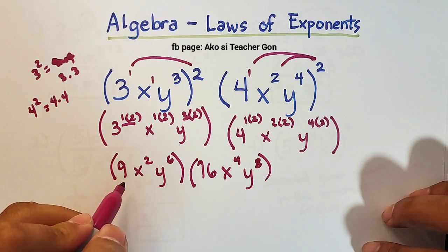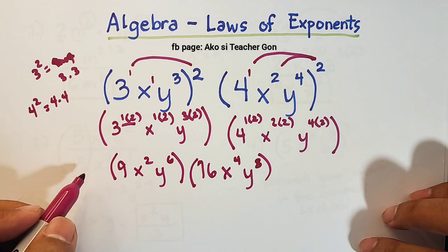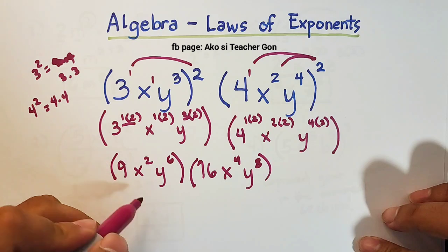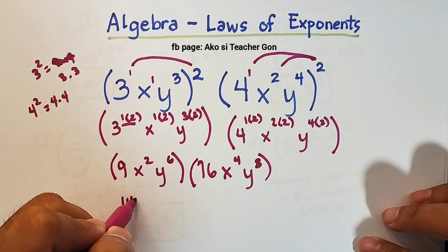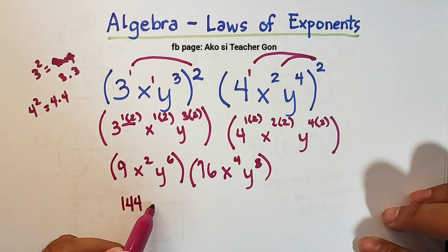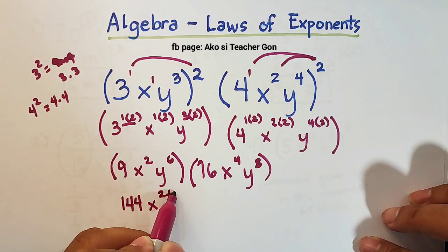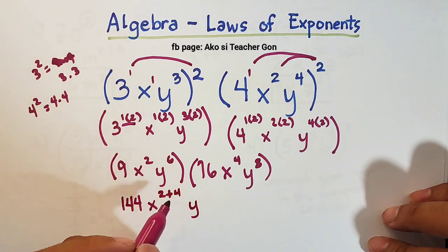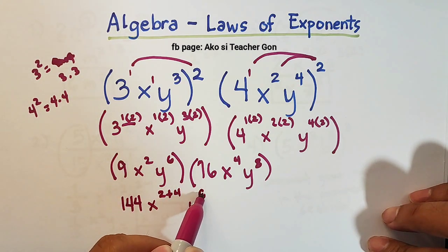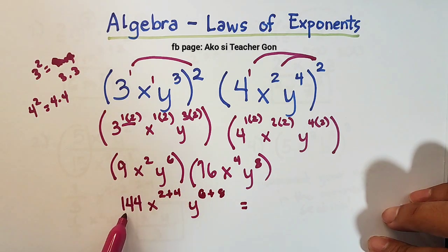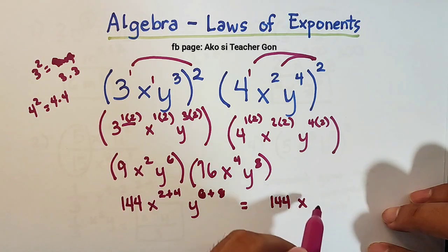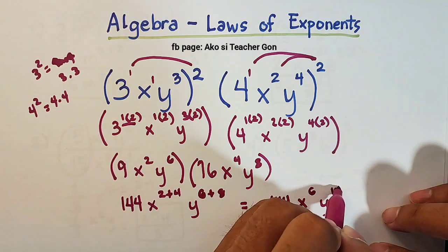First, 9 times 16: 9 times 10 is 90, and 9 times 6 is 54, so 90 plus 54 equals 144. For the x variable, we add exponents using the product rule: 2 plus 4 equals 6. For the y variable, 6 plus 8 equals 14. So the final answer is 144x raised to the 6th, y raised to the 14th power.